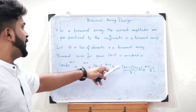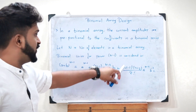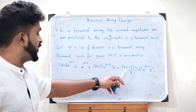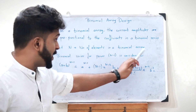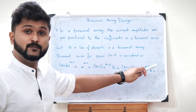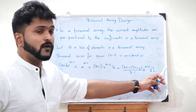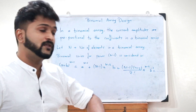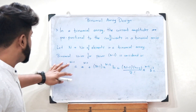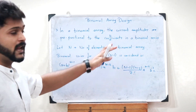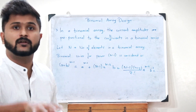Continuing the expansion: (a + b)^(N−1) includes terms (N−1)·a^(N−2)·b + [(N−1)(N−2)/2!]·a^(N−3)·b² and so on. That is the full expansion for a binomial series for power N minus 1.